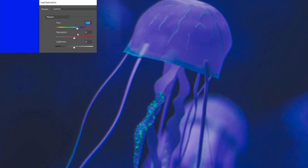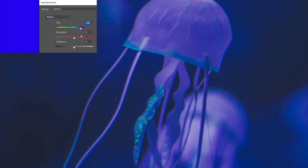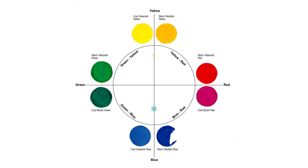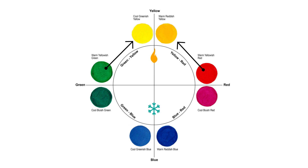So blue is the coldest of the temperatures — that makes yellow the warmest? Yes, exactly. Okay, so how do you get a cold yellow then? For a cold yellow they actually move towards the greens. Warm yellows move towards the red.